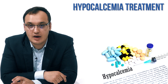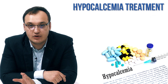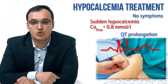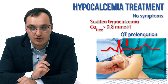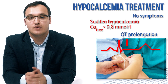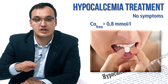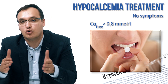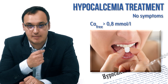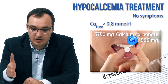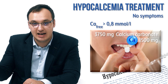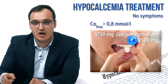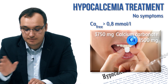To recap: divide patients into two groups — intravenous and oral. Intravenous (calcium gluconate) is for those with symptoms, or those with no symptoms but a rapid calcium drop below 0.8 mmol/L of free ionized calcium, or those with a prolonged QT on ECG. Oral treatment (calcium carbonate, 3,750 mg daily divided into three doses — providing 1,500 mg elemental calcium) is for asymptomatic patients with calcium above 0.8 mmol/L and chronic hypocalcemia. Check weekly and increase the dose as needed. If not achievable, switch to intravenous.